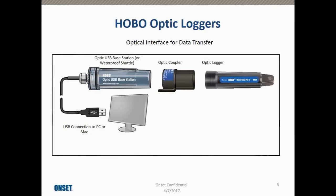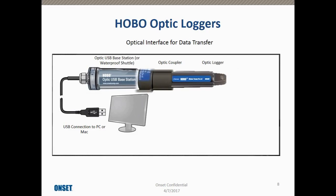You want to make sure that your optic device and your logger are firmly mated to each other. Here we see the base station — the same applies with the waterproof shuttle. Here's the coupler and here's an optic logger, a U-22. When you mate these together, make sure the coupler is on as far as it will go onto the base station or shuttle, and that the logger is firmly seated and correctly oriented into the coupler. This is especially important for pendants, which use optics on the side rather than the end. You may even have to push it against the side of your desk to make sure it's on all the way.